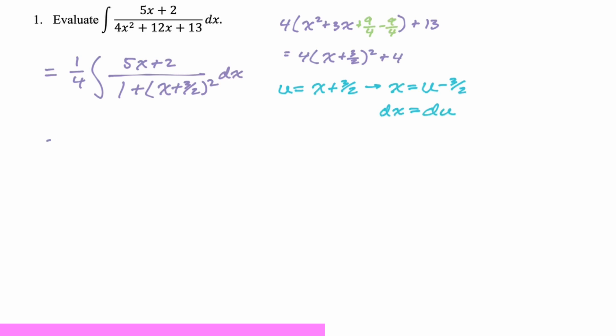Okay, let's make all of our substitutions. So we're still going to have a 1 fourth. We're going to have the integral of 5 times x, but x is u minus 3 halves, so replace that. Plus 2 is still there. 1 plus now u squared, and dx becomes du. So here what we want to do is clean up the numerator a little bit. We still have 1 fourth. We're going to have 5u, and then minus 15 halves plus 4 halves, so minus 11 halves, all over 1 plus u squared. And we got our du.